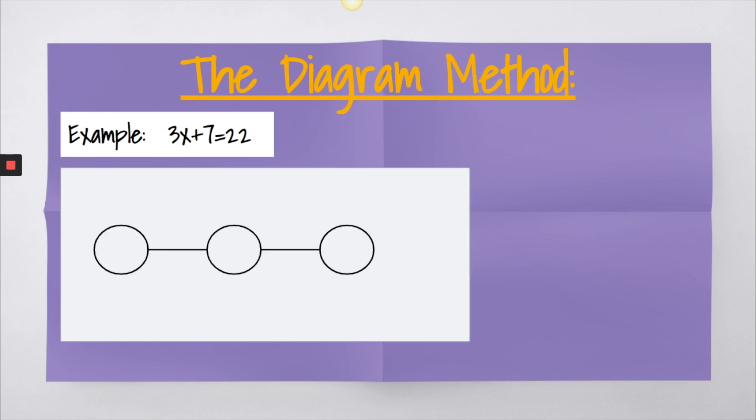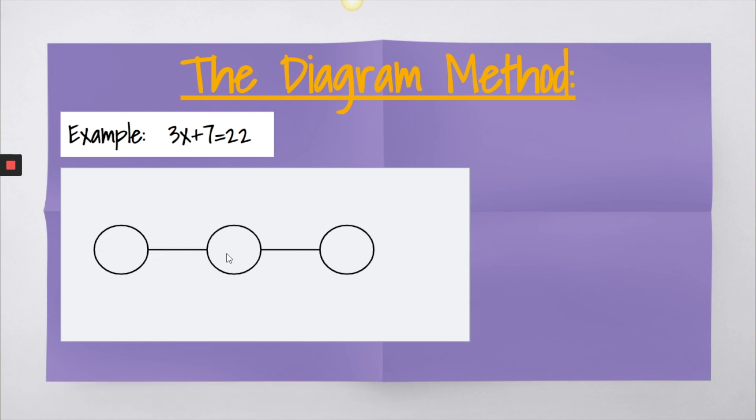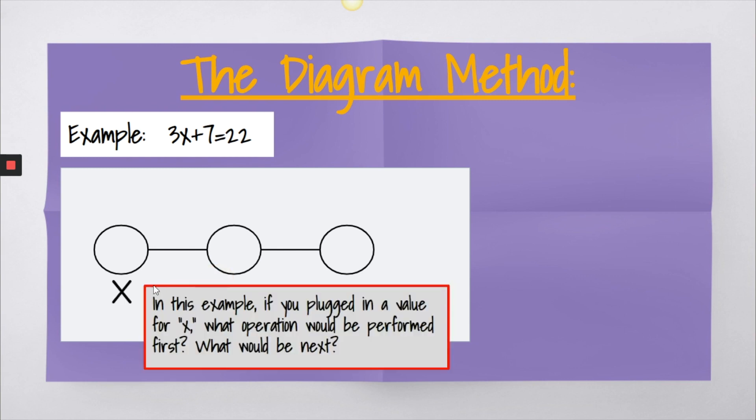Our first example, 3x plus 7 equals 22. We're always going to start with our diagram. This is what our diagram will look like. Three circles and a line that connects each one of those circles. We always start by placing an x below the first circle.